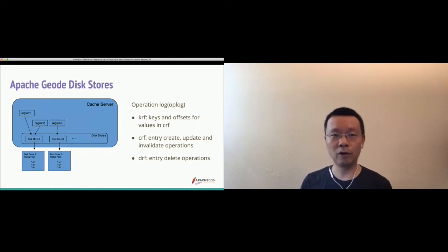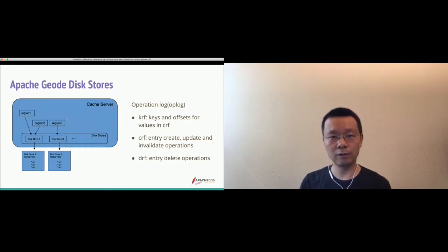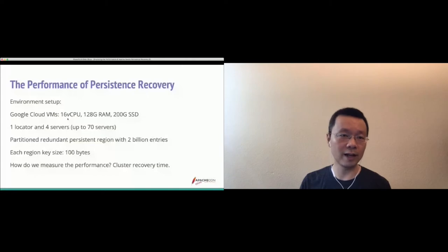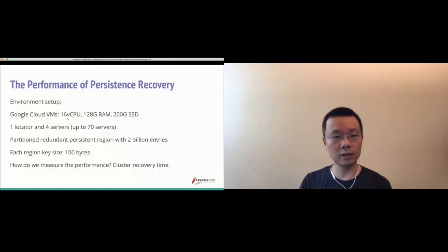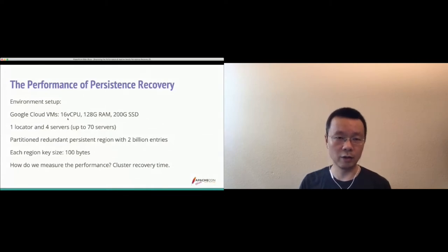Now it's time to talk about the performance of persistence recovery. Since Geode offers superior performance for applications, we always seek ways to improve it. We did some persistence recovery tests for a whole cluster on Google Cloud, using VMs with 16 vCPUs, 128 GB memory, and a 200 GB SSD hard drive each. We started with a small cluster — one locator and two servers — and then scaled up to, for example, 70 servers.